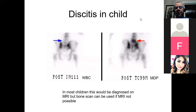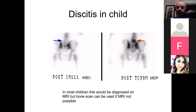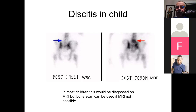Rarely we get asked to do discitis, which is an infection occurring under the age of around five in the disc between vertebrae. When you do that, primarily we should do bone scanning because discitis can be negative on white cell studies. In the present age you might consider FDG PET because that will be positive too, but these tend to be diagnosed on MRI, so may only be requested if MRI is not possible.